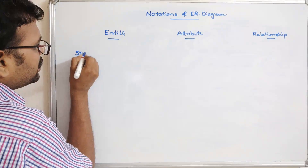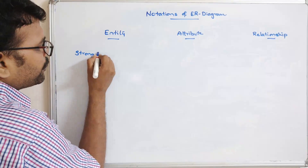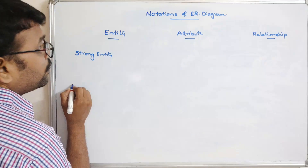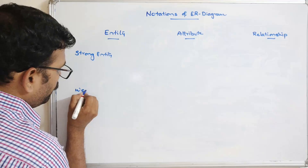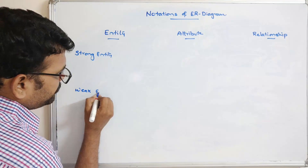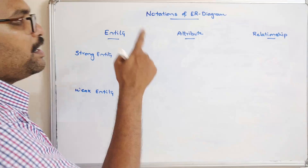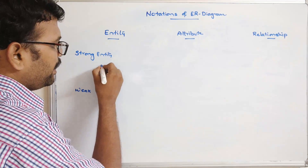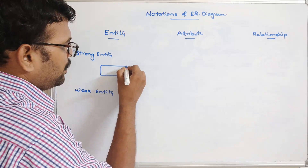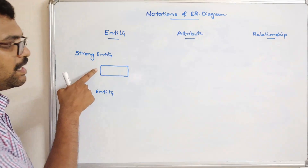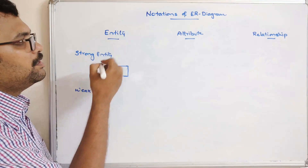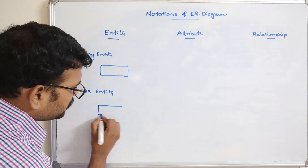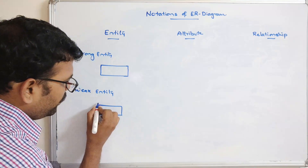For entities, there are two categories: strong entity and weak entity. In the ER diagram, a strong entity is represented as a rectangle box. A weak entity is represented as a double rectangle box.